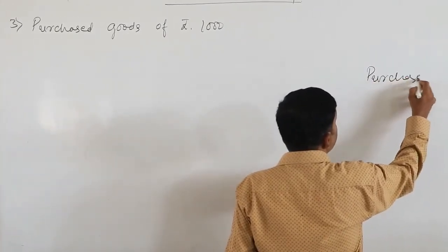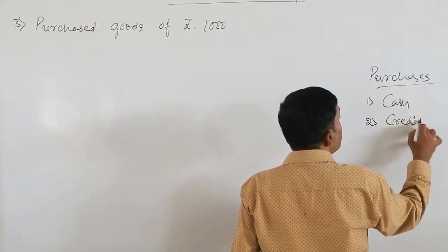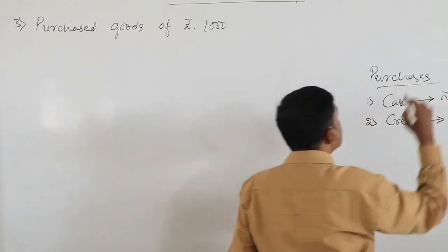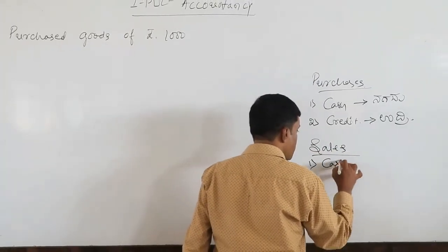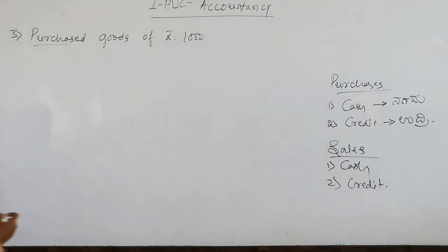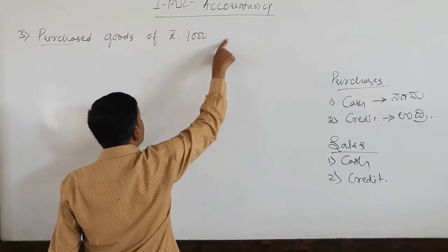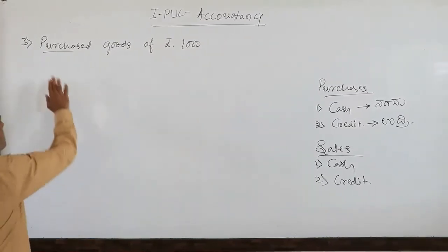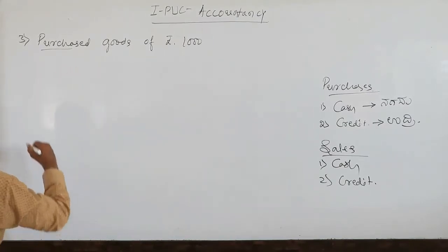If it is a credit purchase, the seller's name who sold the goods to us will be mentioned here. But here his name is not mentioned, so this purchase is a cash purchase.